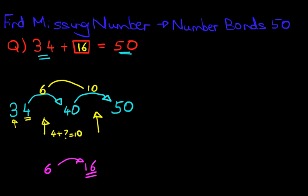So 34 plus 16 equals 50. Now that was nice and easy wasn't it? Let's have a look at one more example.